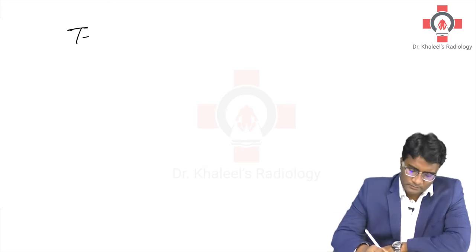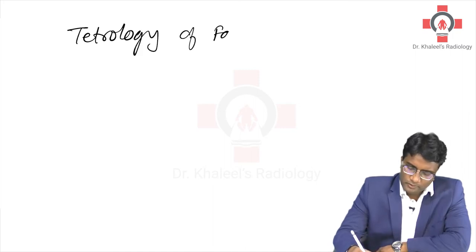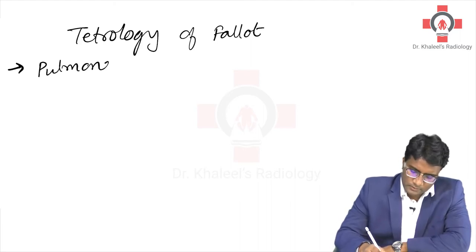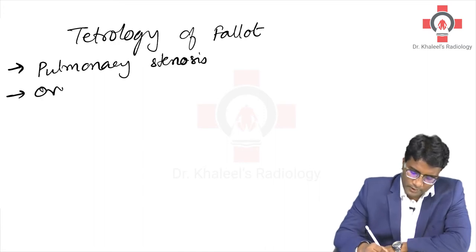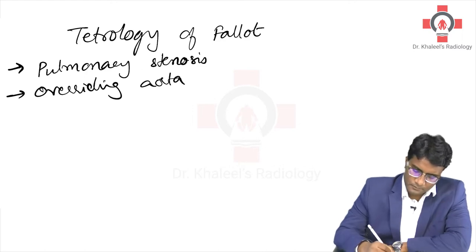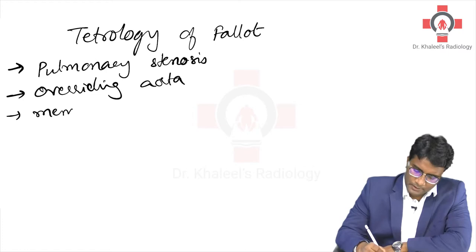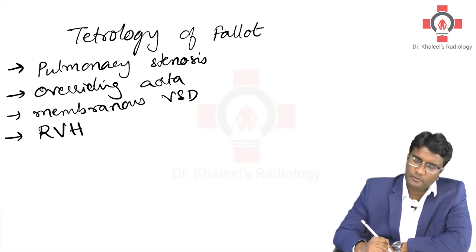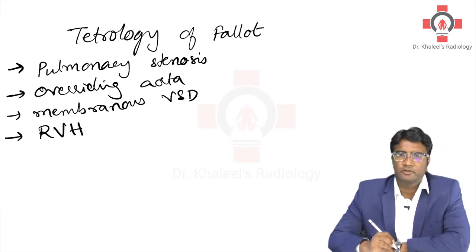What is Tetralogy of Fallot? In Tetralogy of Fallot, what are the four things that we see? There is pulmonary stenosis and overriding aorta, there is membranous VSD, ventricular septal defect, and also right ventricular hypertrophy. These four things are the Tetralogy of Fallot.